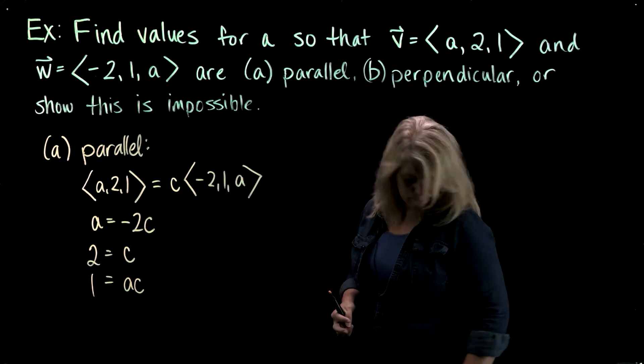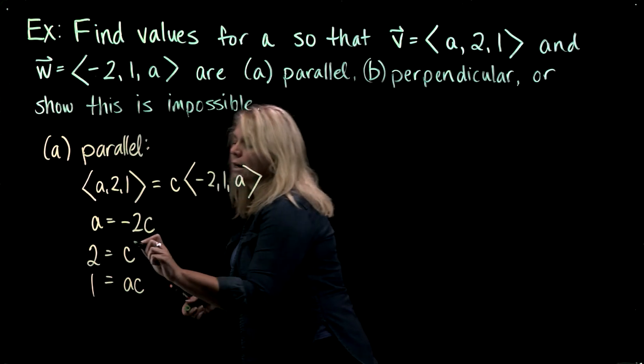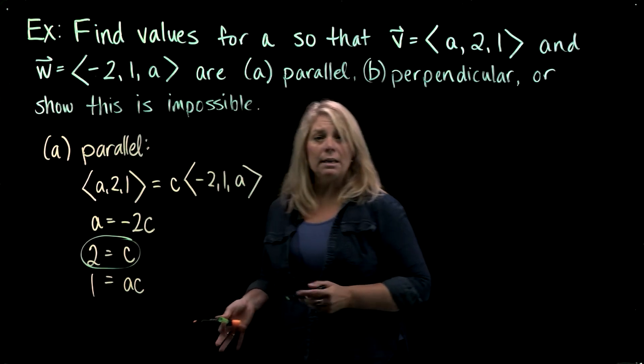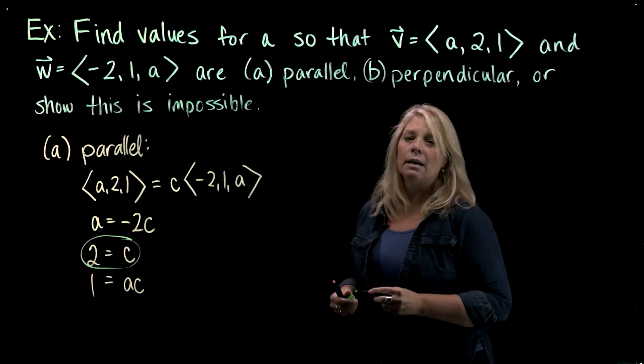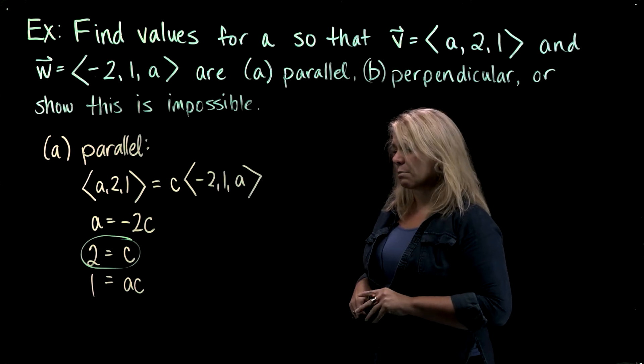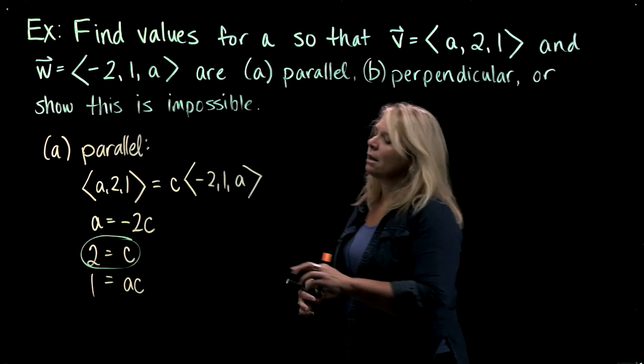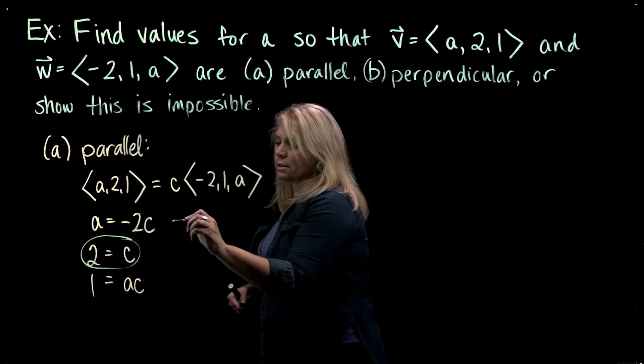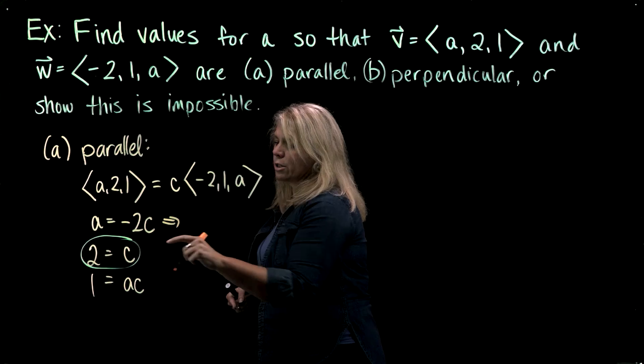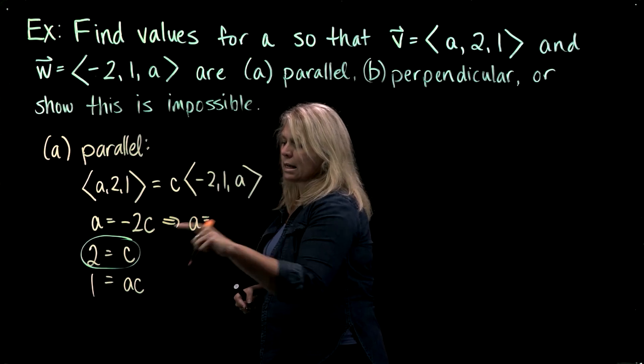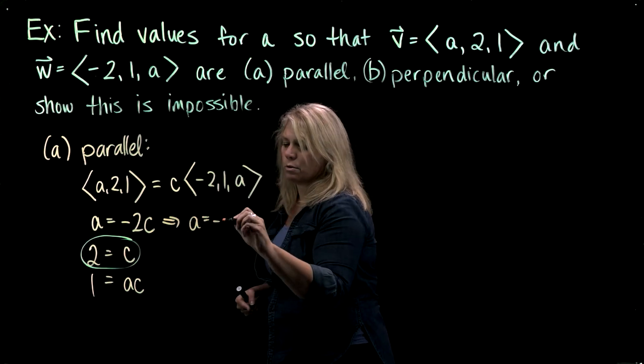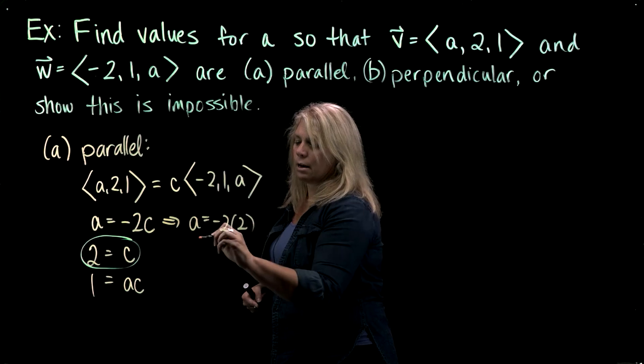In this particular problem, the second equation here just gives us a value for C. So once I have that, I could plug that in either place and figure out a corresponding value for A. So if C equals 2, then this first equation says that A has to equal negative 2 times 2, so negative 4.